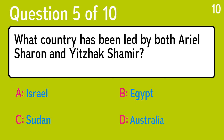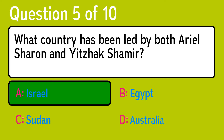Question 5. What country has been led by both Ariel Sharon and Yitzhak Shamir? The correct answer is A, Israel.